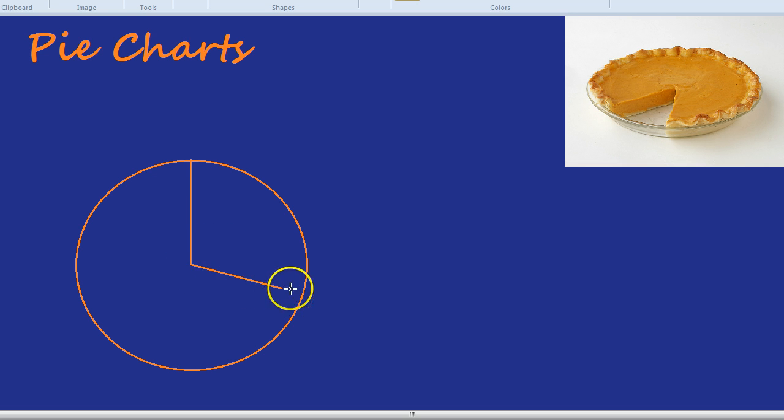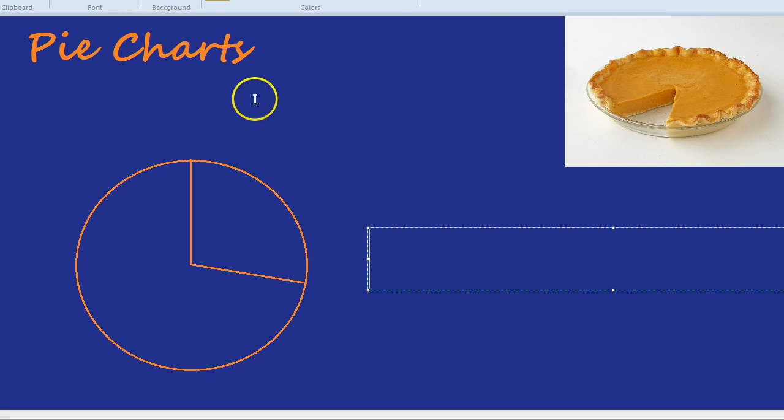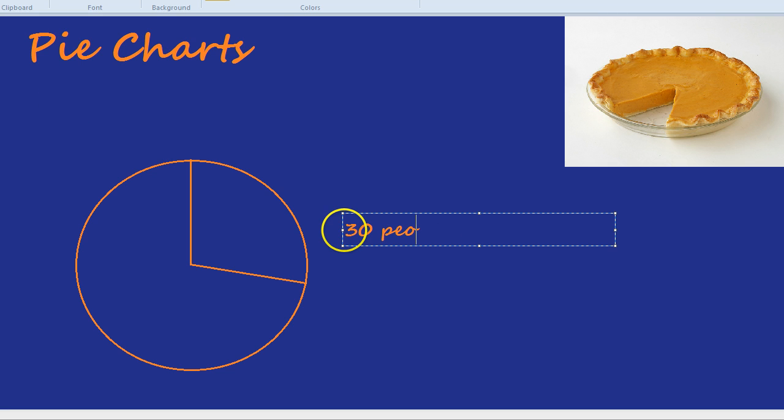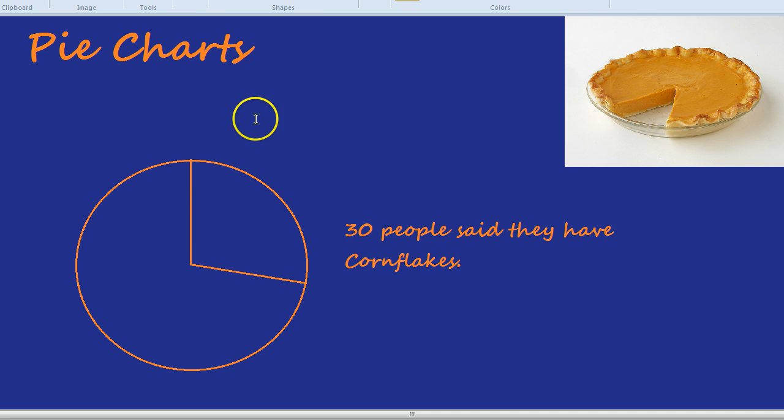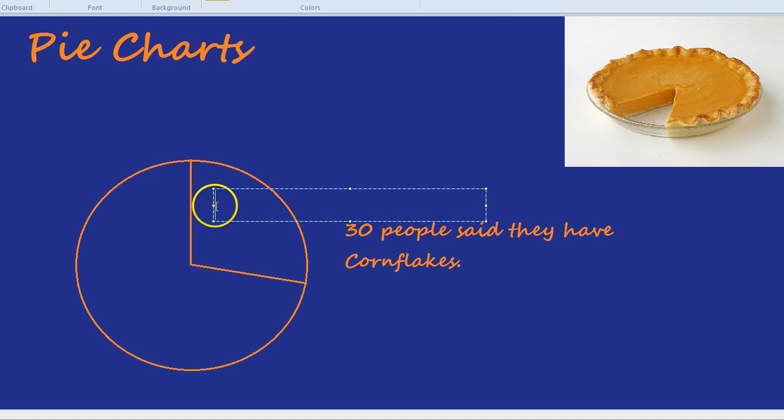So this pie chart is going to represent a survey that was done. In this survey, it's about breakfasts, different types of things that you have for breakfast. In the survey, 30 people said they have cornflakes. Cornflakes, and here they are, the cornflake group.